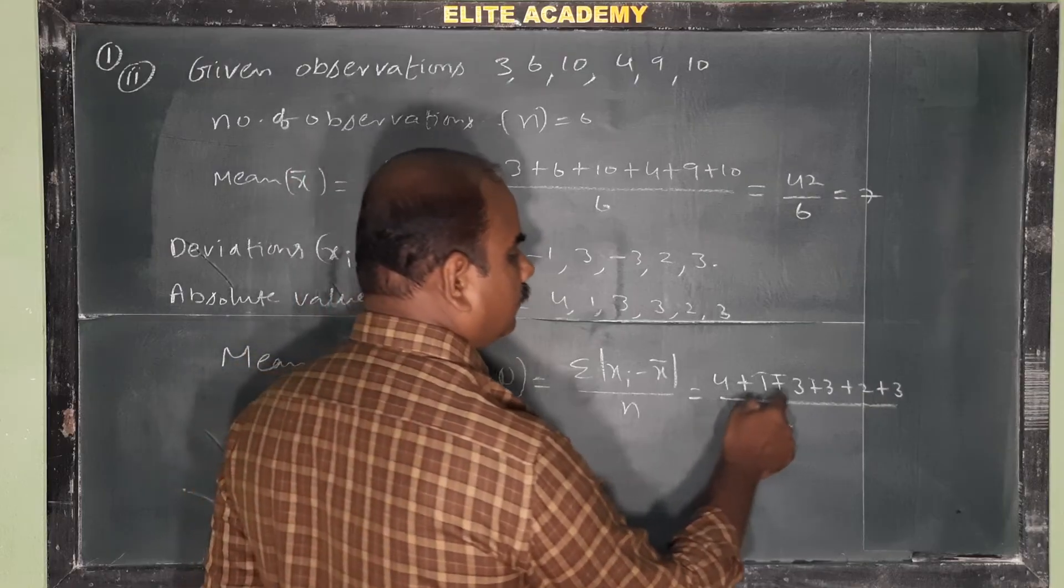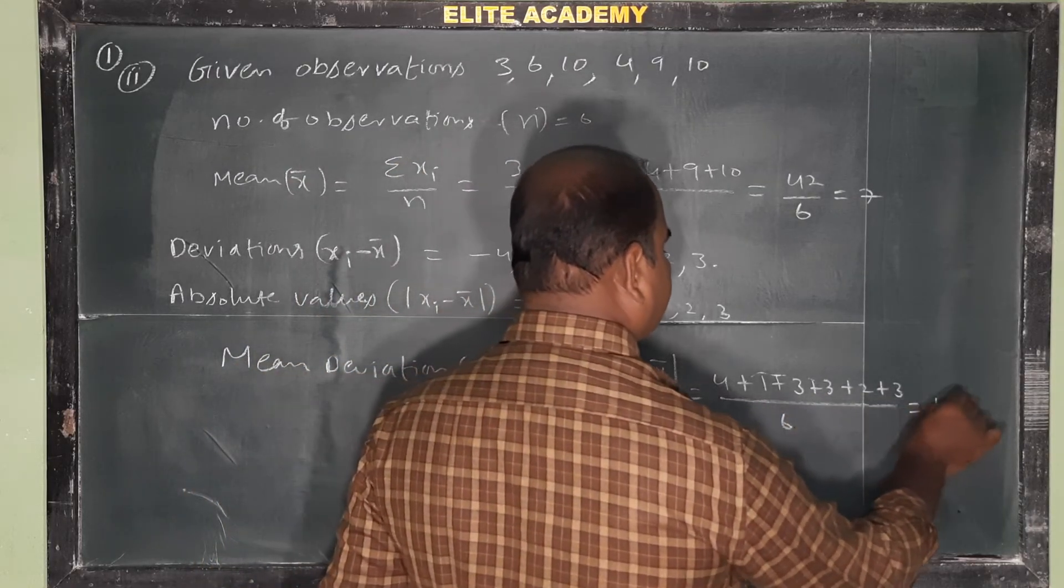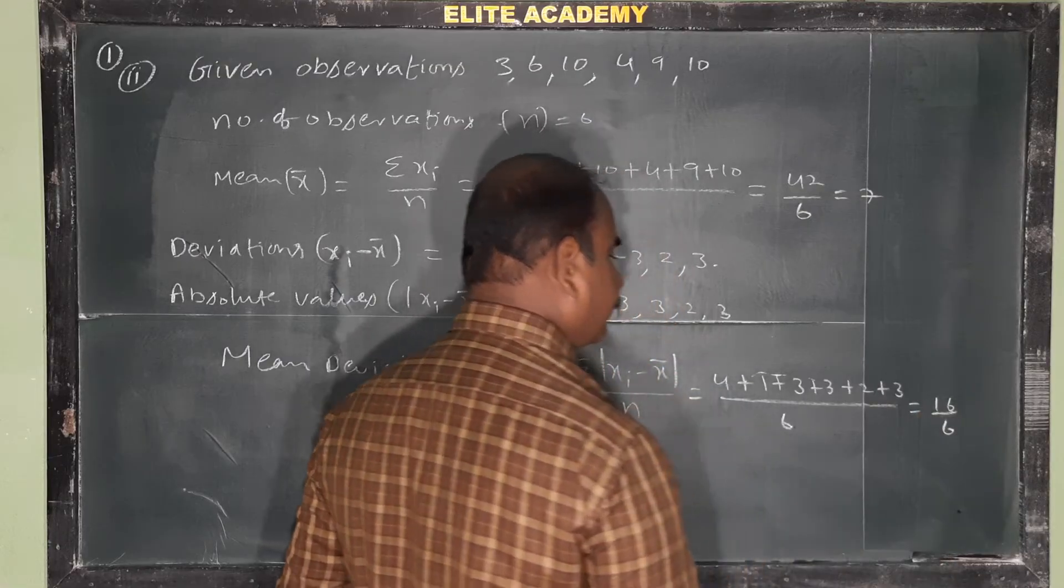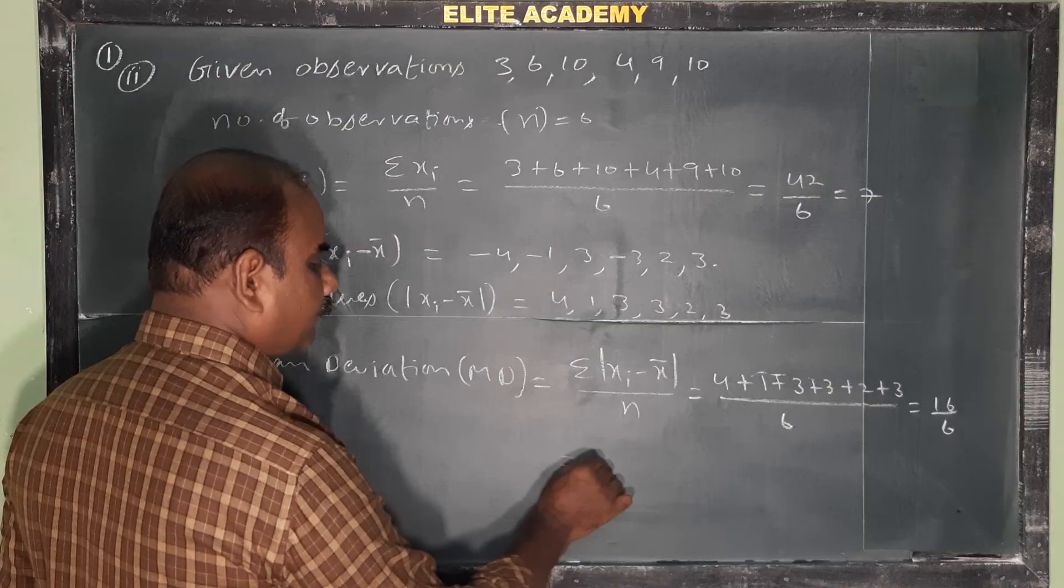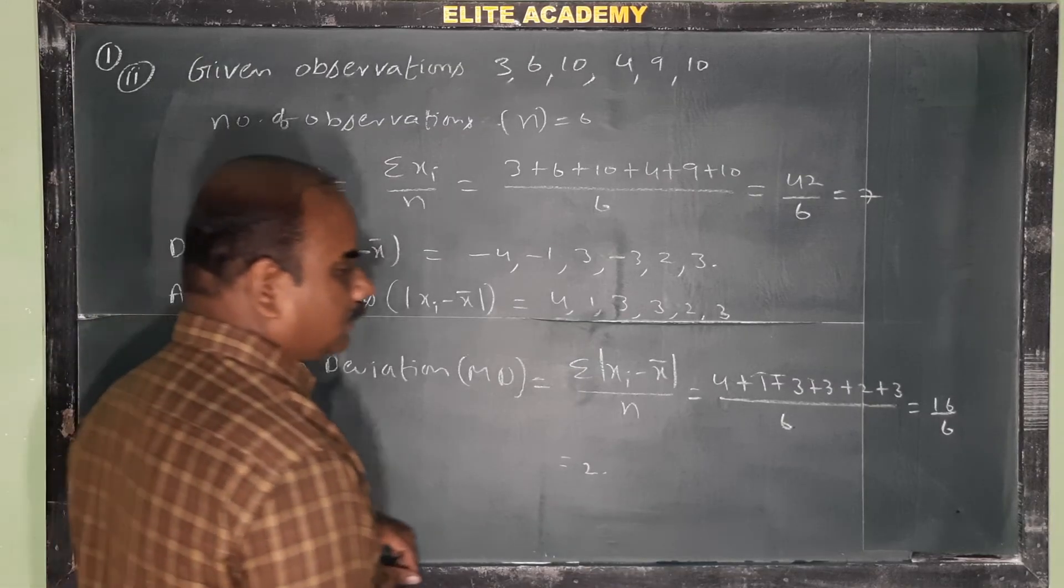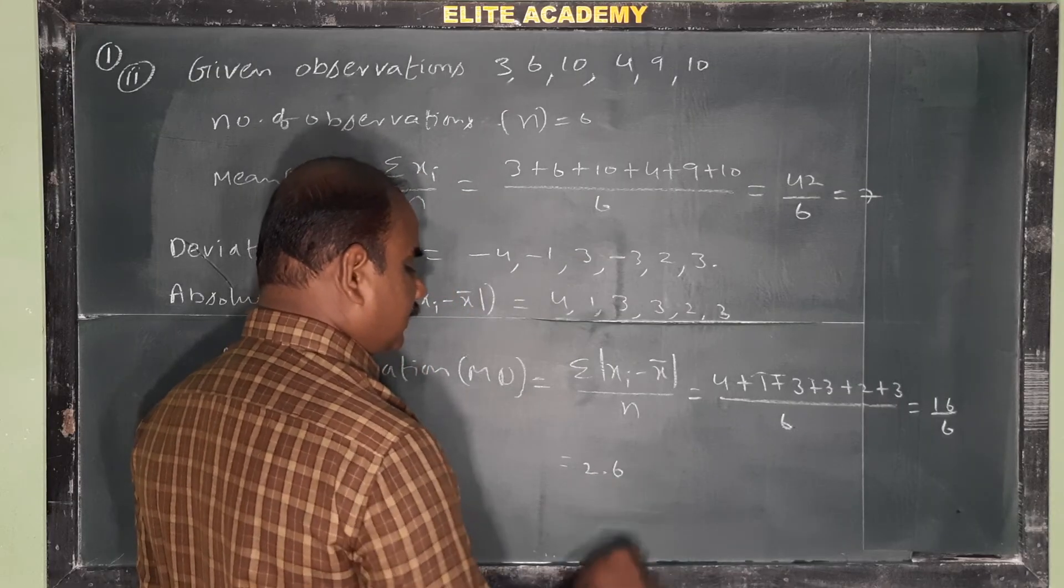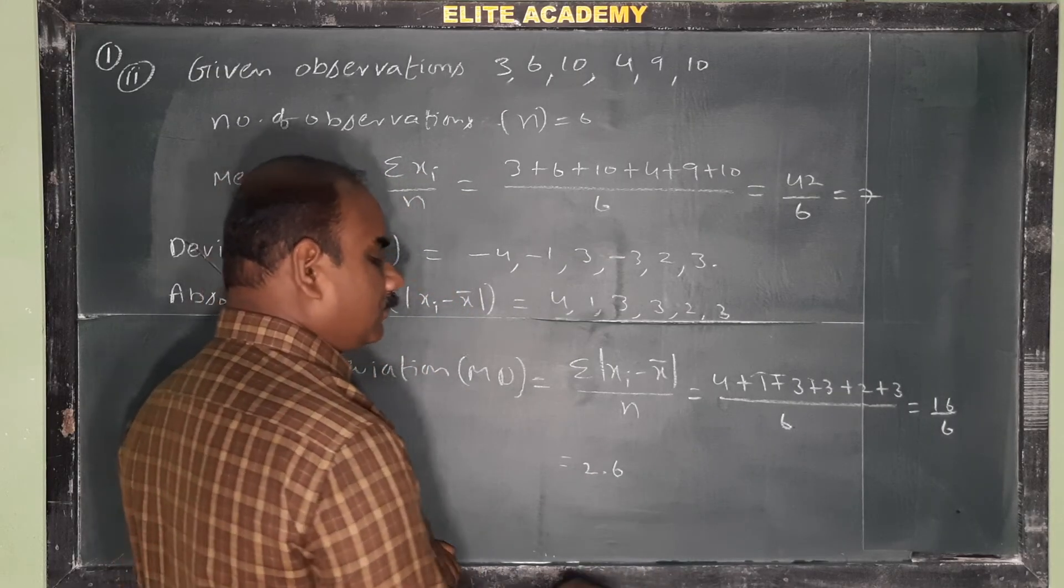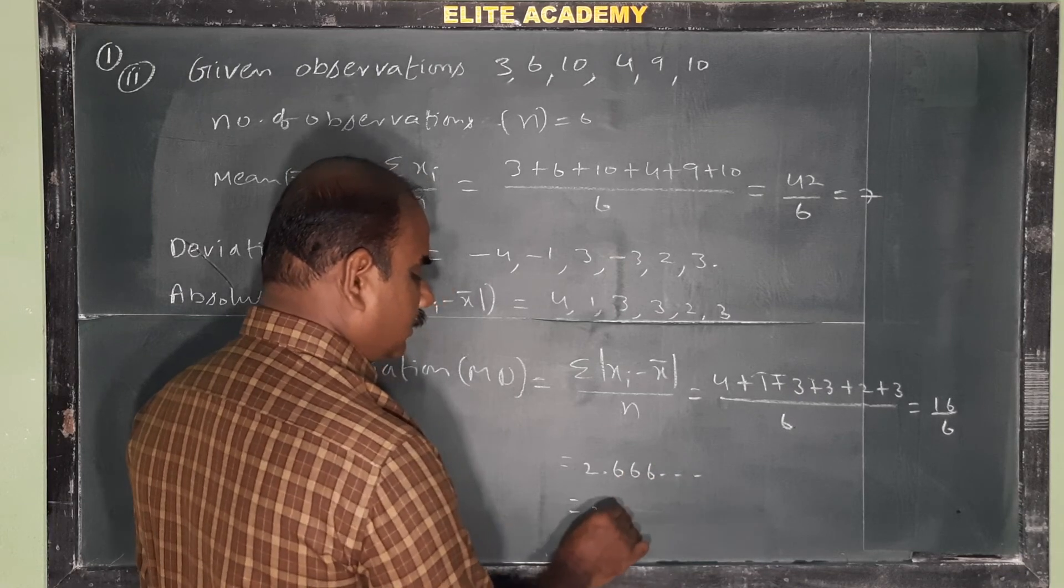So 4, 1 is 5, 3 is 8, 3 is 11, 2 is 13, 3 is 16. So 16 by 6. Simplifying: 16 by 6 equals approximately 2.67.